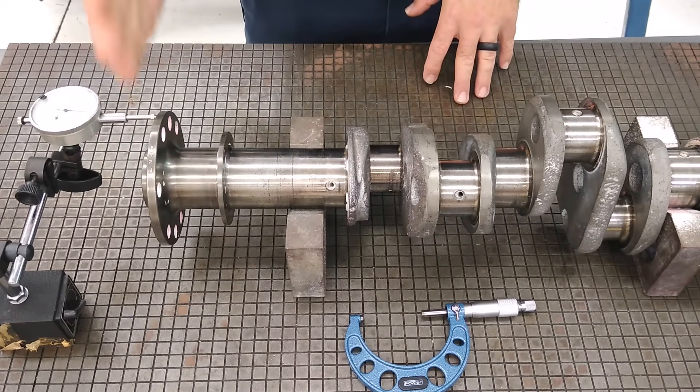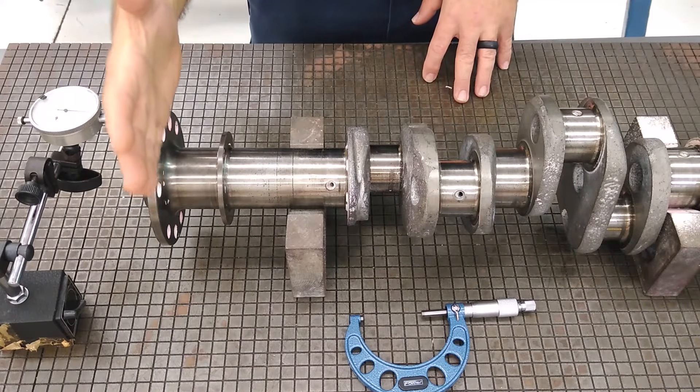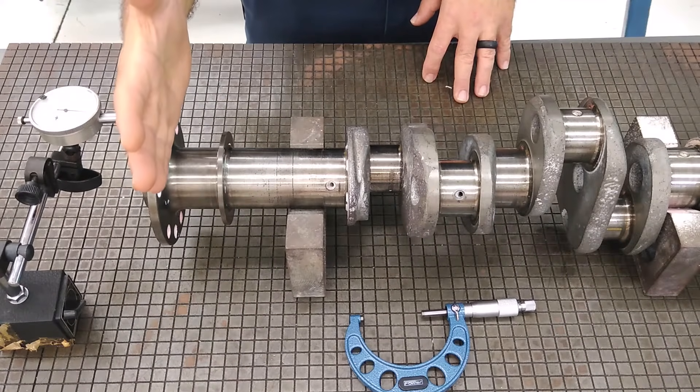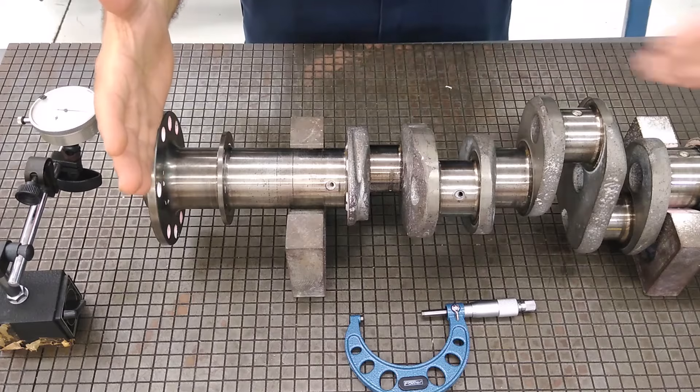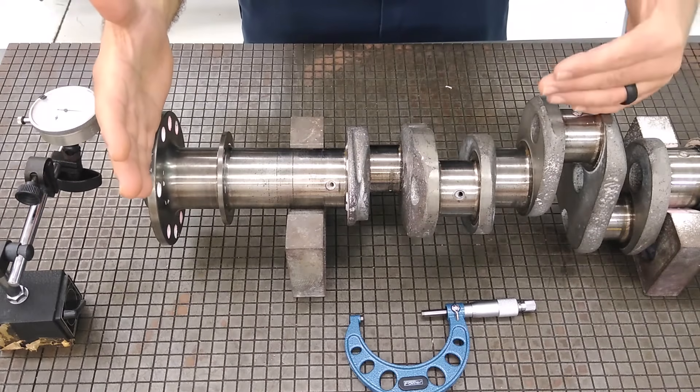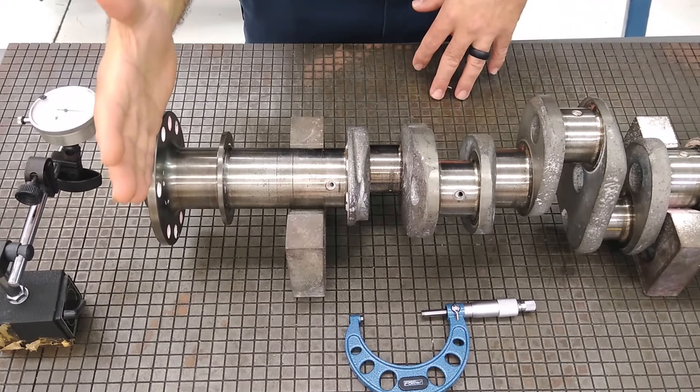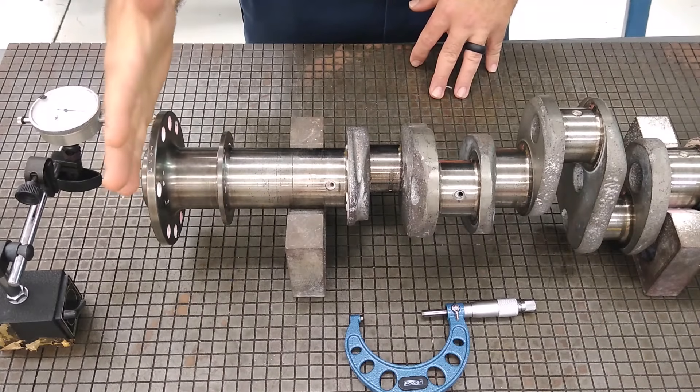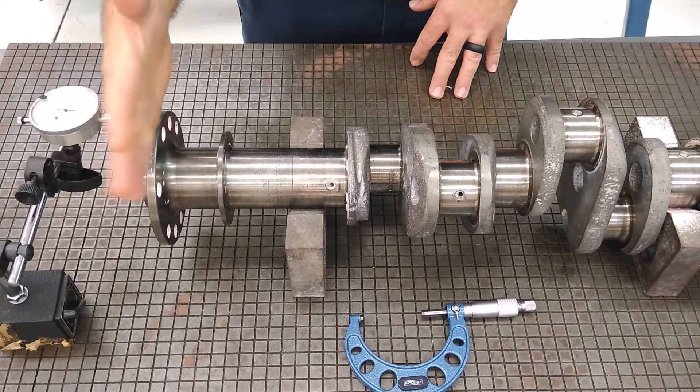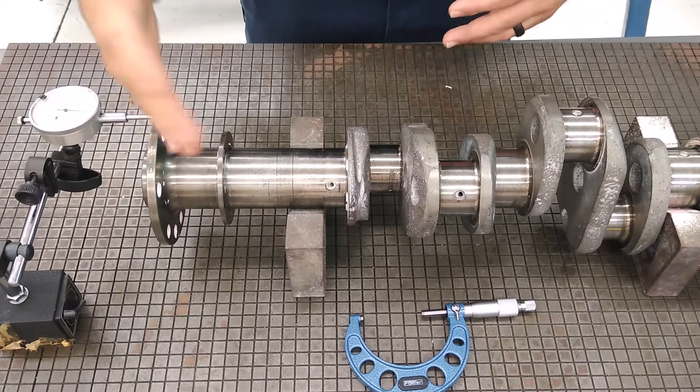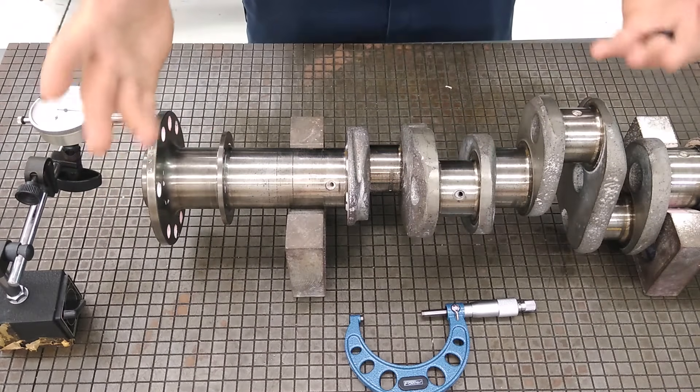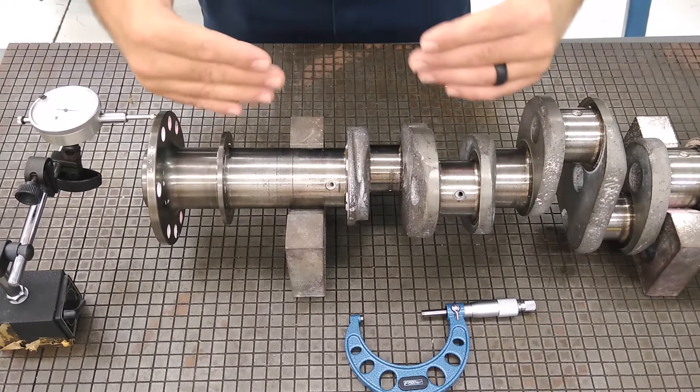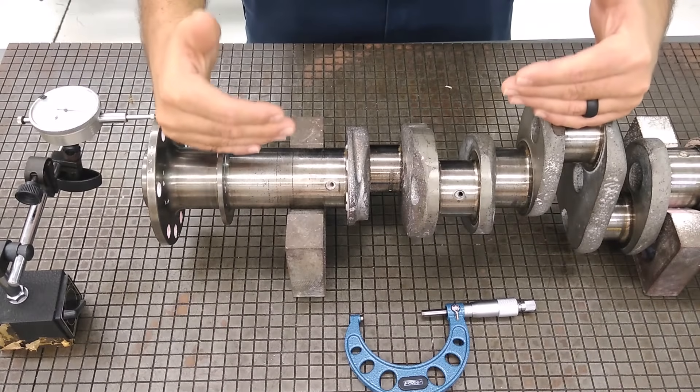This flange, you would want it to run perfectly perpendicular, in a plane perpendicular to the center line of the crankshaft. If that flange, that plane of rotation, wobbled at all, it would cause vibrations on your propeller, which you don't want. That's an indication of a bent crankshaft.